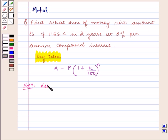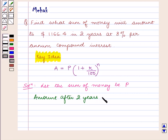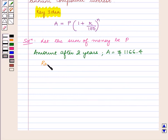Let the sum of money be P. The amount after 2 years, that is A, equals $1166.4. The rate of interest R equals 8% per annum, and the time n equals 2 years.